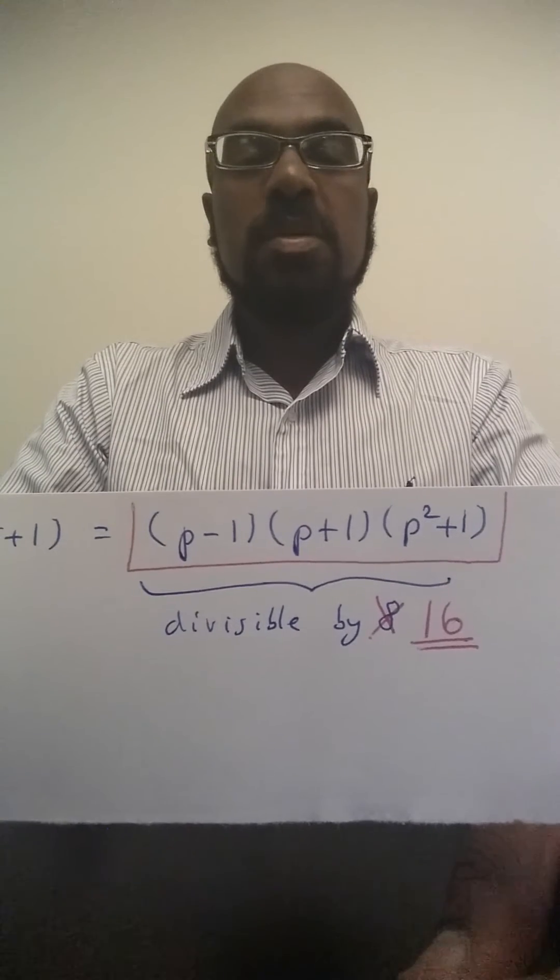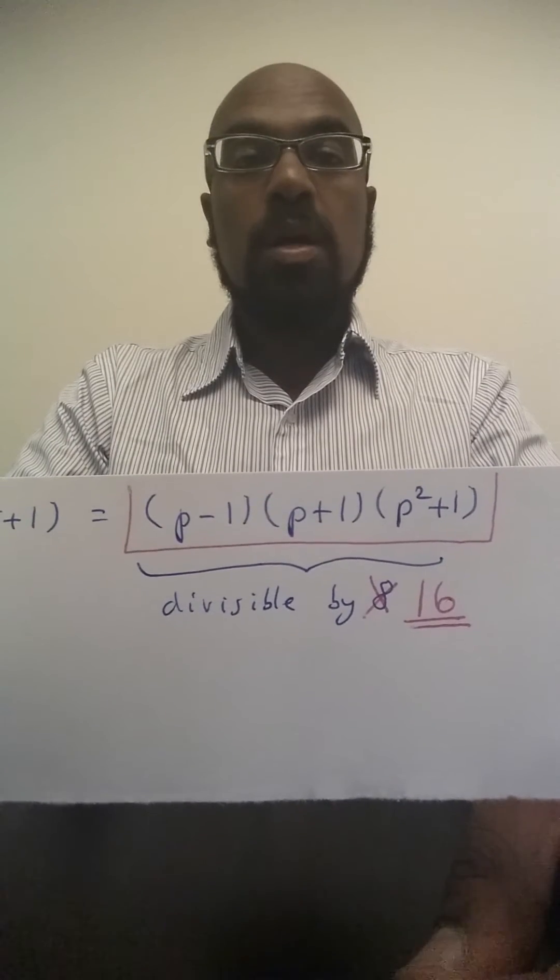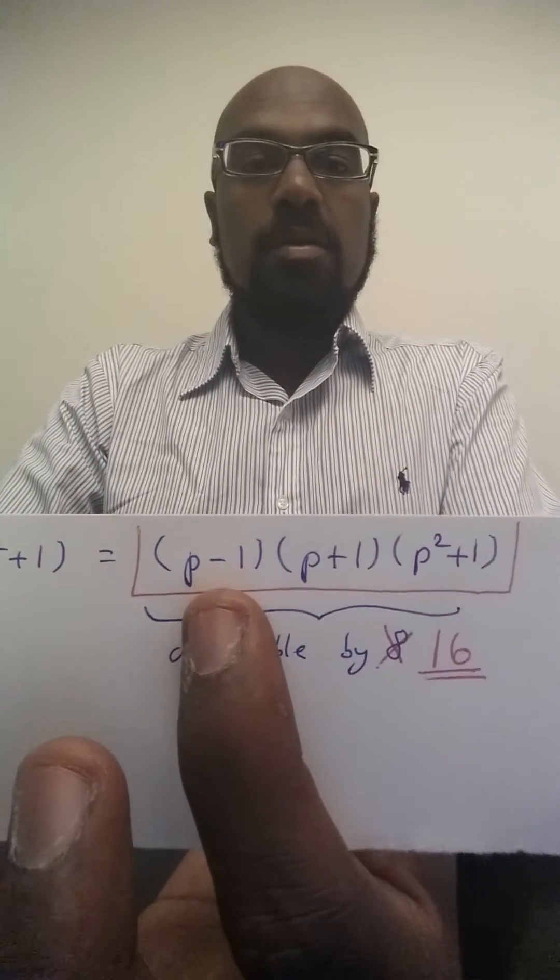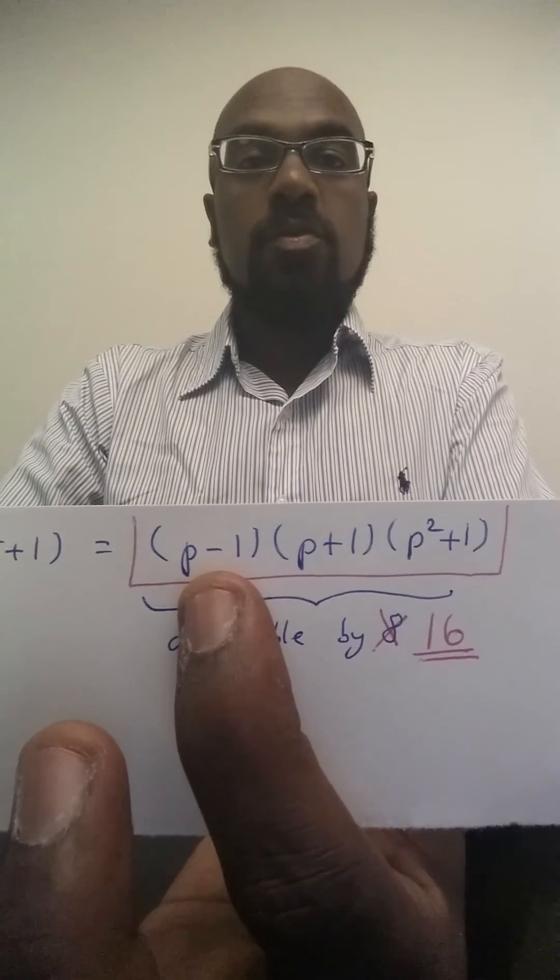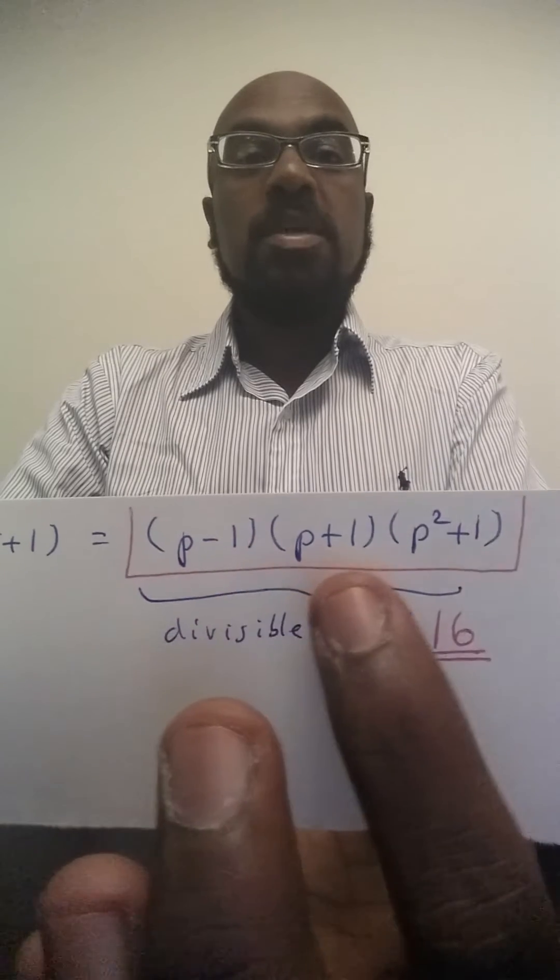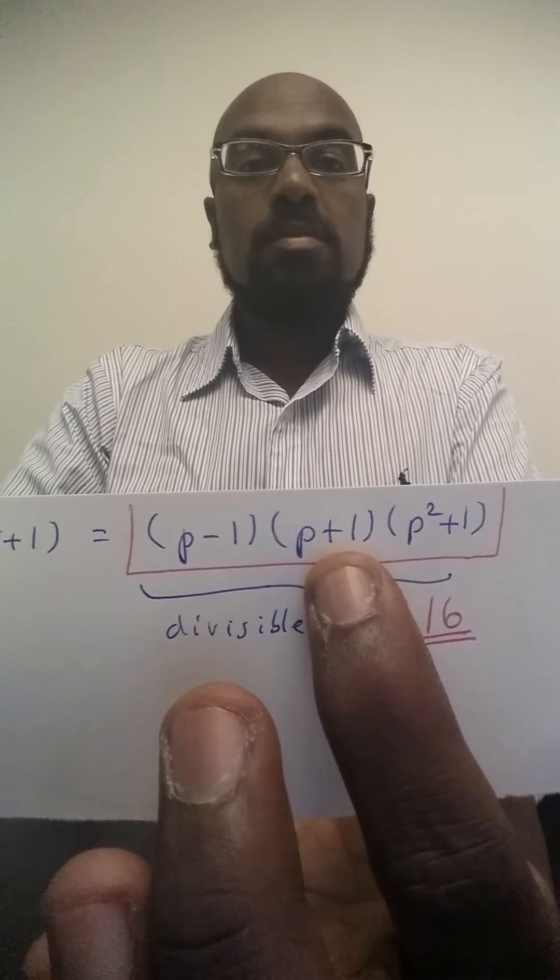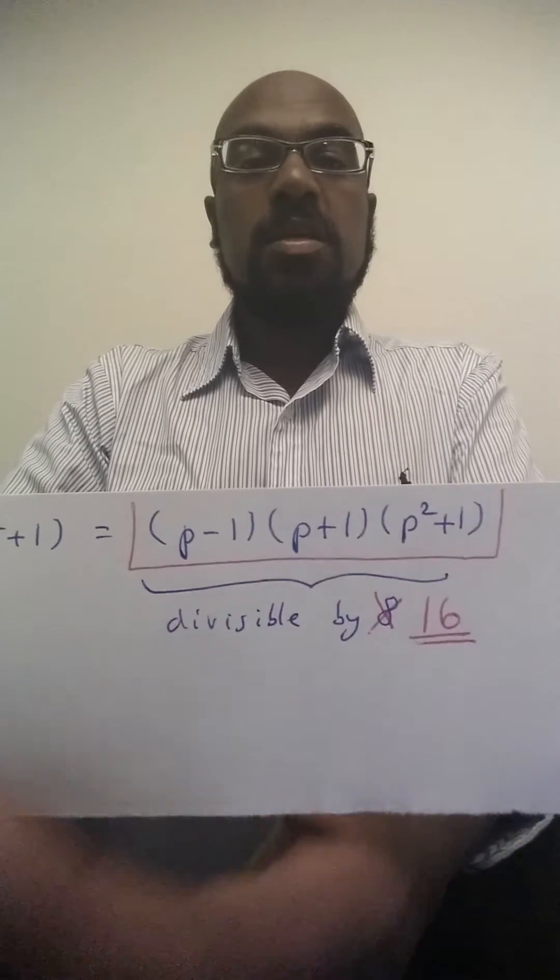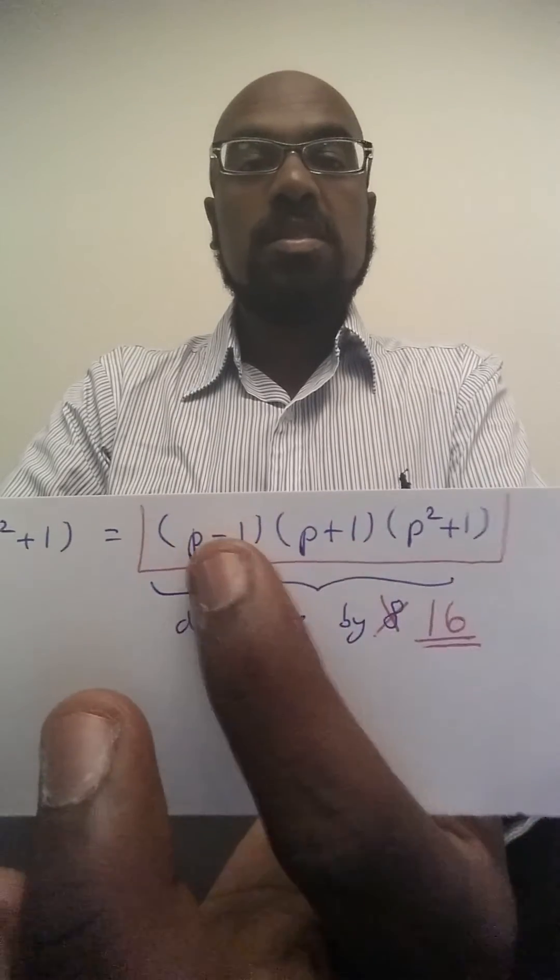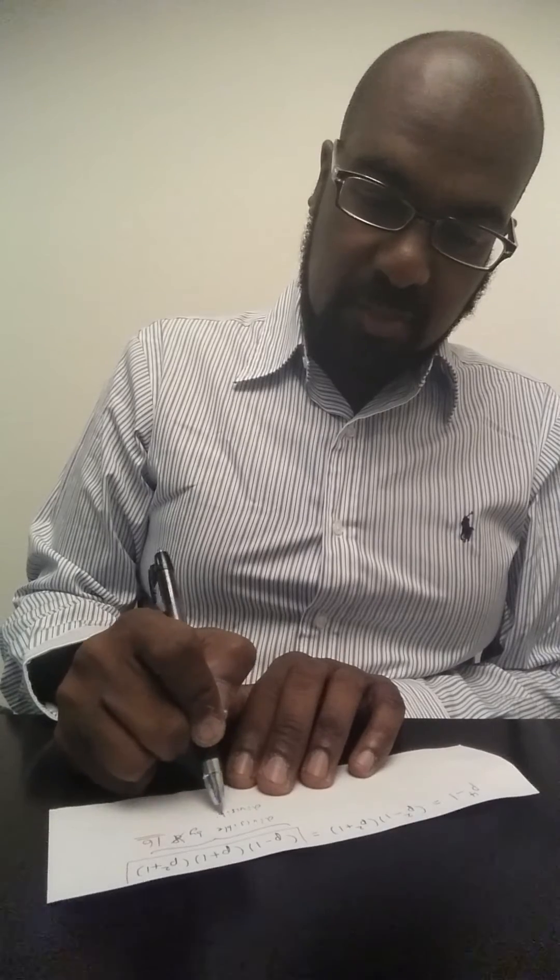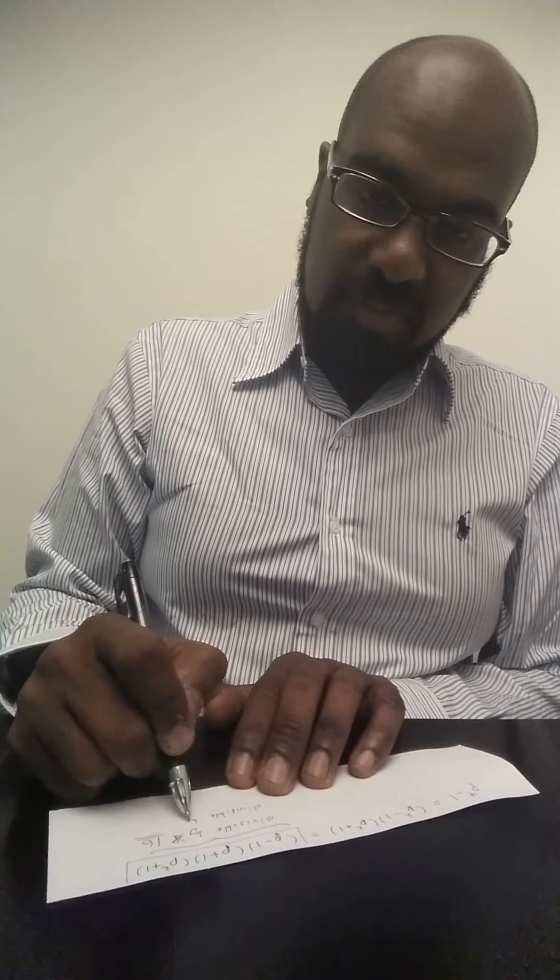If the remainder when p is divided by 3 is 1, then p minus 1 is divisible by 3. If the remainder is 2, then p plus 1 is divisible by 3. So regardless of what p is, one of these two values is divisible by 3. And so the expression p to the fourth minus 1 is indeed divisible by 3.